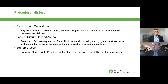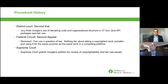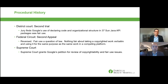In the second trial, the jury found that Google's use of the declaring code and organizational structure in the 37 Sun Java API packages was fair use. That verdict was appealed as well, and again the Federal Circuit reversed, saying fair use is a question of law reviewable de novo, and that there's nothing fair about taking a copyrighted work verbatim — 11,500 lines of code — and using it for the same purpose in a competing platform. At this point, the Supreme Court granted Google's petition for review of both the copyrightability issue and the fair use issue.